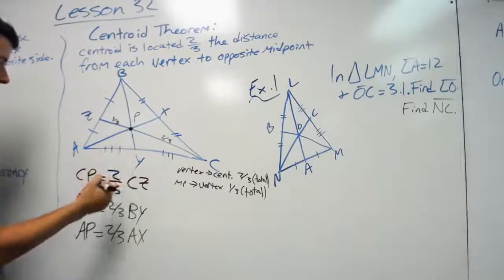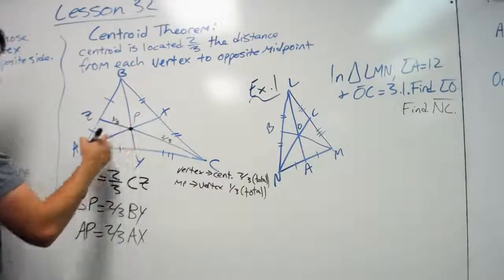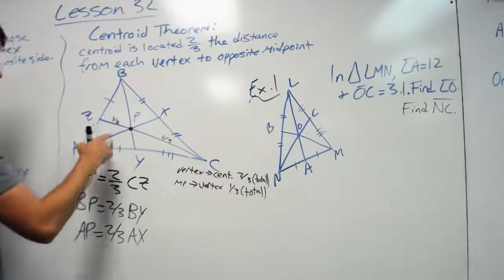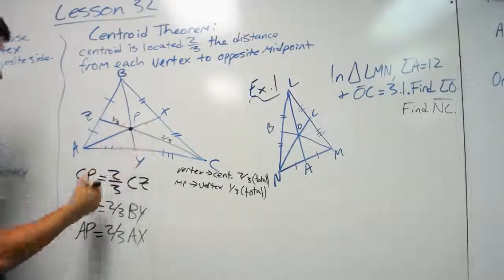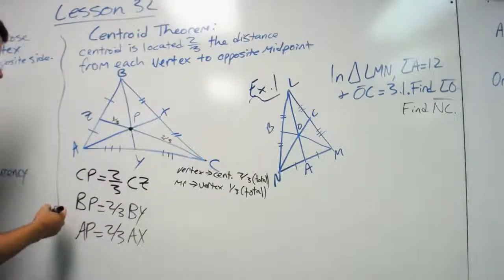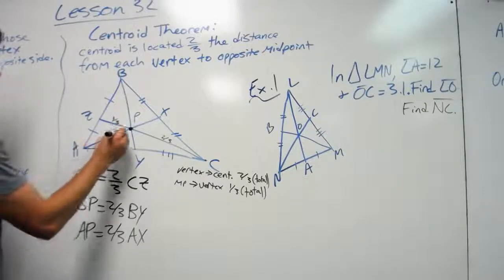BY is the total line. So the total is AX. So AP equals two-thirds of AX. So the one that has two-thirds distance is always from the vertex to the centroid.